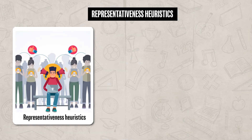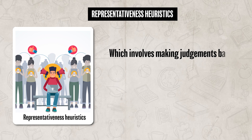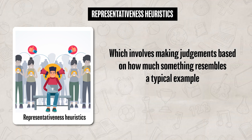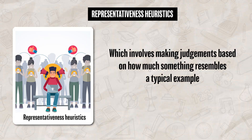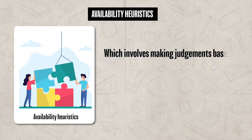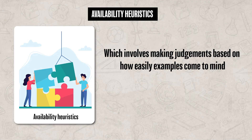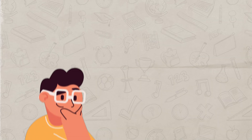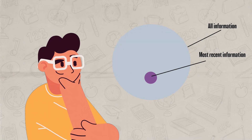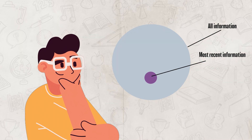The first is representativeness heuristics, which involves making judgments based on how much something resembles or represents a typical case or stereotype. This can cause individuals to overlook important details in favor of information that aligns with their expectations or personal biases. The second is availability heuristics, which involves making judgments based on how easily examples come to mind. This can lead to errors when decisions are heavily influenced by recent or vivid memories rather than a full consideration of all the facts.